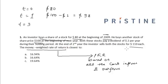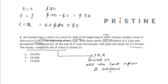At t=2, he sells both stocks for $110 each and also receives a dividend of $2 on both stocks. So at t=2, his net cash inflow equals 2 × $110 (cash proceeds from the sale of the stocks) plus $4 in dividends, which gives $224.